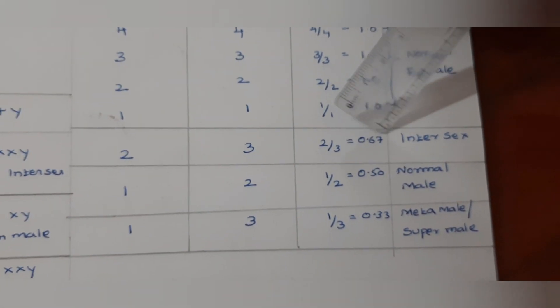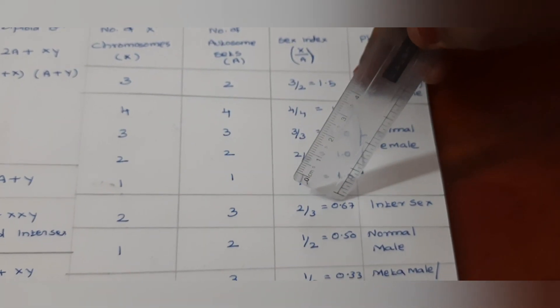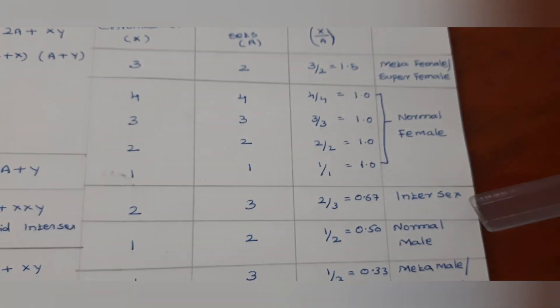When the sex index value comes below 1, 0.67, with X chromosome number 2 and autosome 3, 2 by 3 equals 0.67, then intersex results.